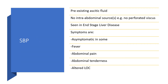Going into specific complications. Spontaneous bacterial peritonitis will occur only when there is pre-existing ascitic fluid. Before we can say this is spontaneous bacterial peritonitis, there must be no intra-abdominal source or sources — for example, no perforated viscus, no trauma from the outside penetrating through the abdomen. This will also be seen in end-stage liver disease.